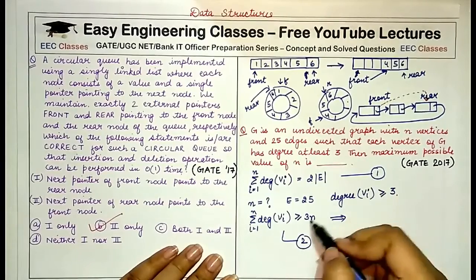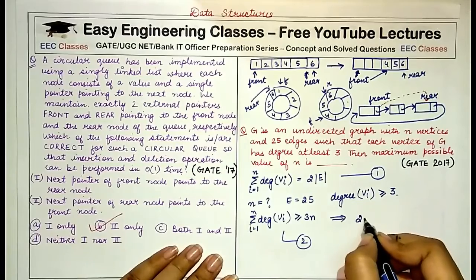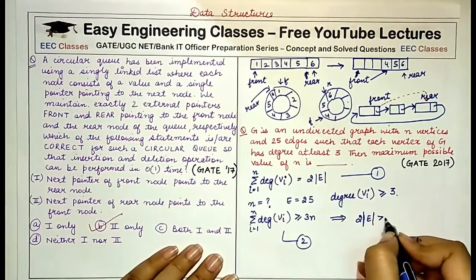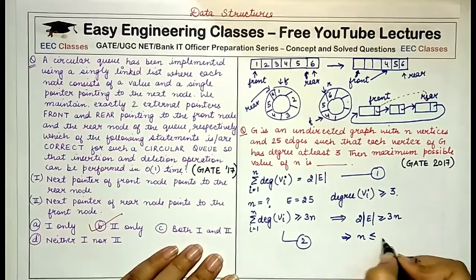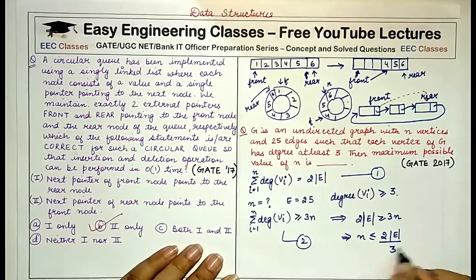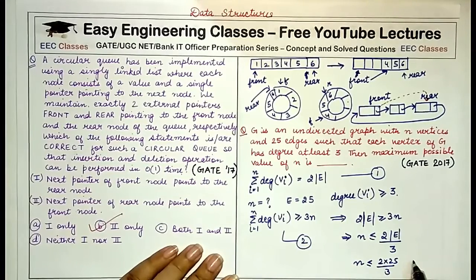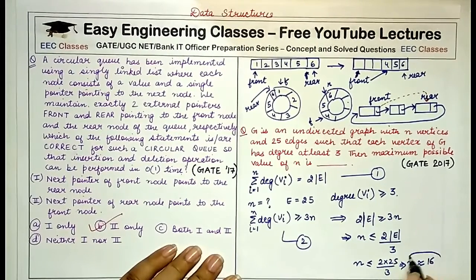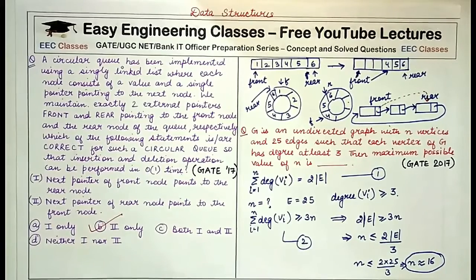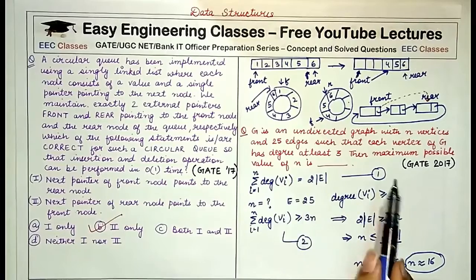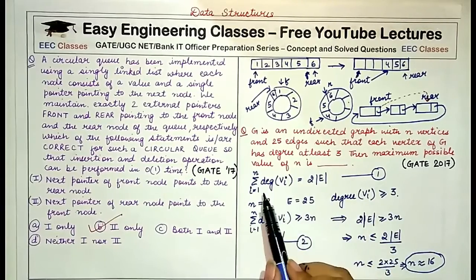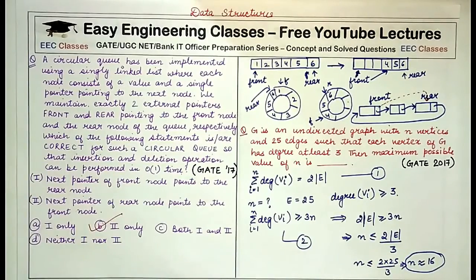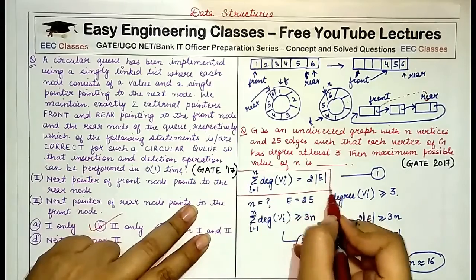Equating the two expressions: 2e ≥ 3n, which gives n ≤ 2e/3. So n ≤ 2×25/3 = 50/3 ≈ 16. The maximum possible value of n is 16. The key formula to remember is: the sum of the degrees of vertices equals twice the number of edges.